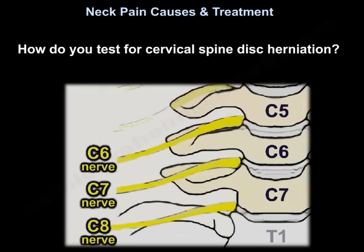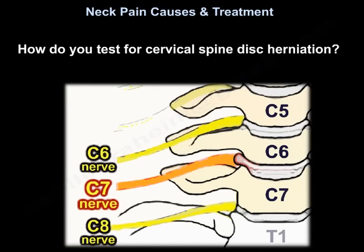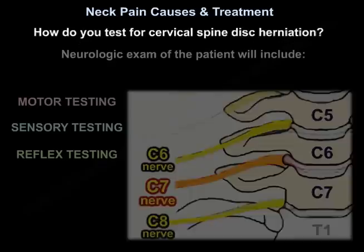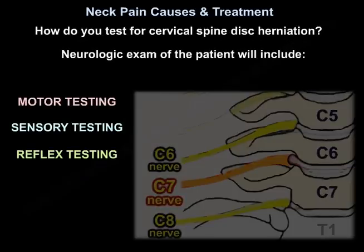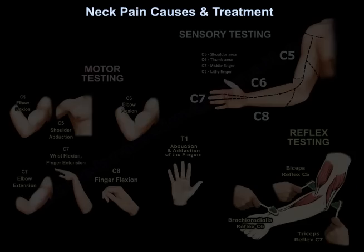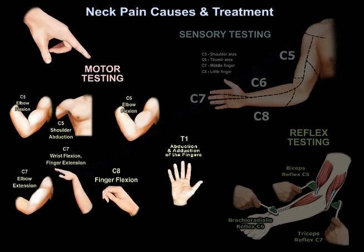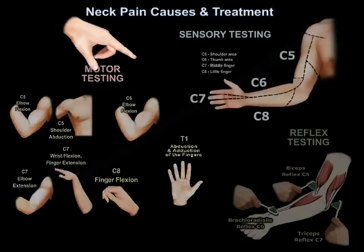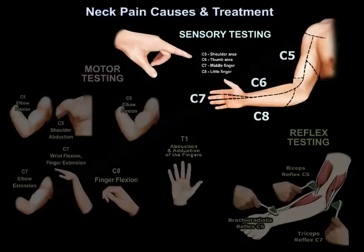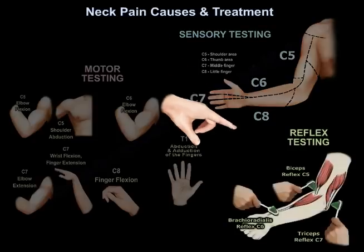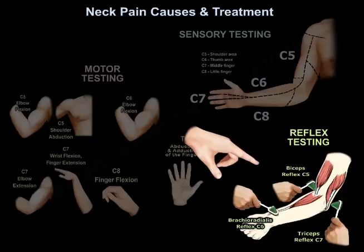How do you test for cervical spine disc herniation? You test the motor, the sensory, and the reflexes. This is how you test the motor strength of the nerve roots from C5 to T1. This is how you test the sensation, as seen in this diagram. This is how you test the reflexes, as seen in this diagram.